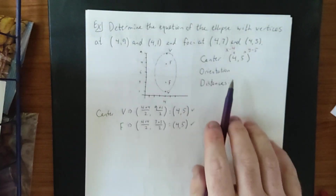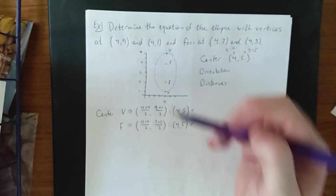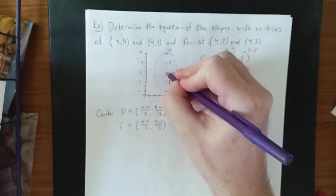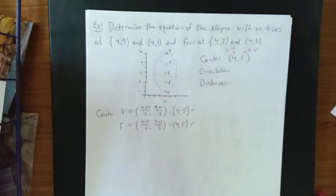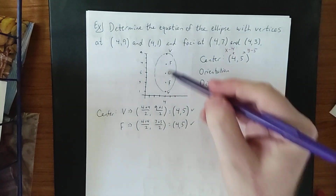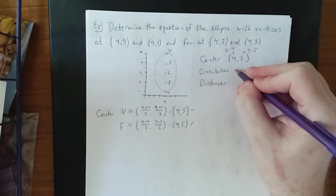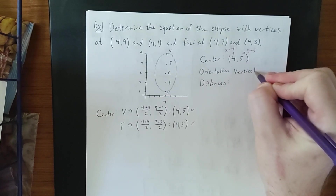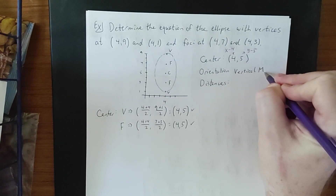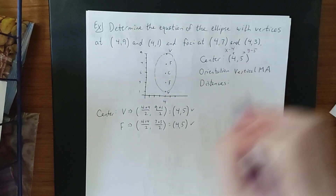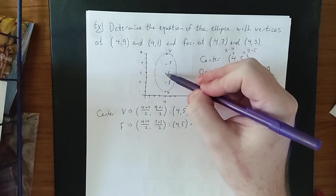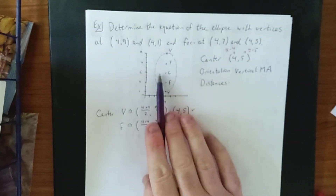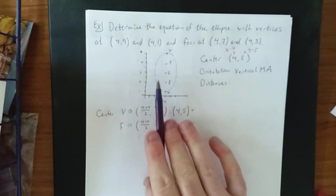As far as orientation is concerned, the vertices, foci, and center all appear on the same vertical line, indicating we are dealing with a vertical major axis. This means the a value is associated with the y variable and the b value is associated with the x variable.